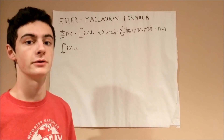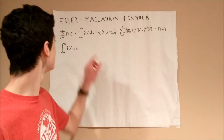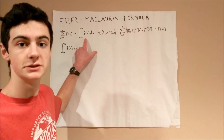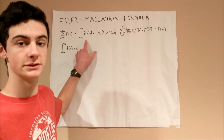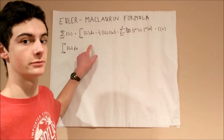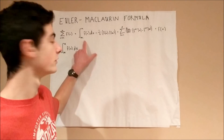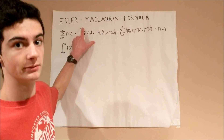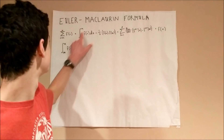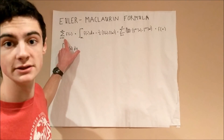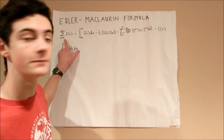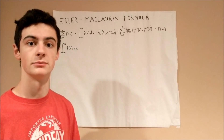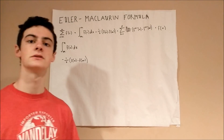Let's work on the first part. You can see the first part is actually just integrating the function with respect to its variable from the lower limit m to the upper limit n, which is the same as the original summation. Solving that gives you the first component.